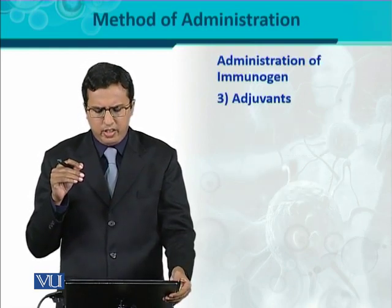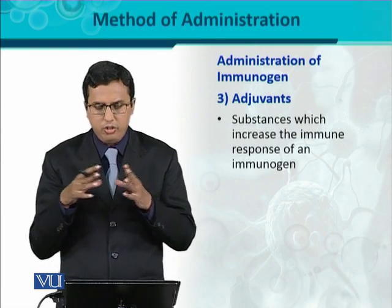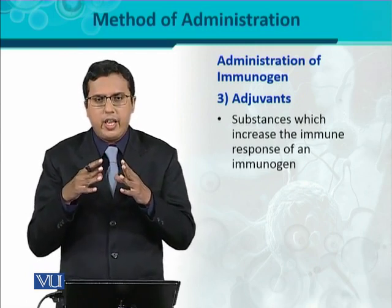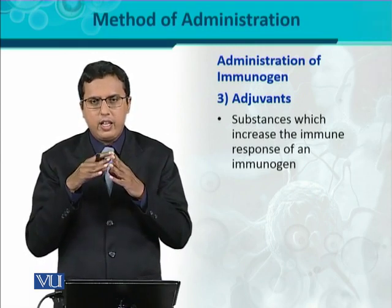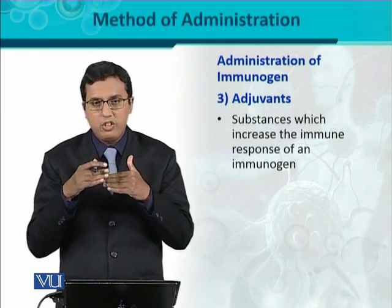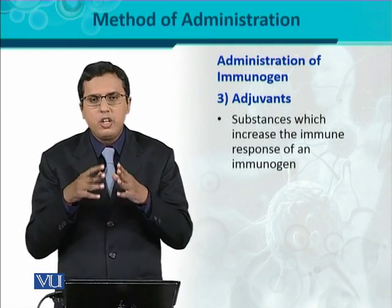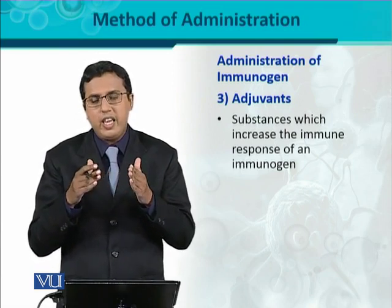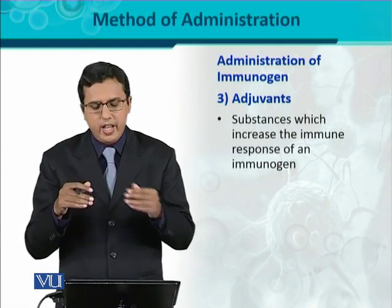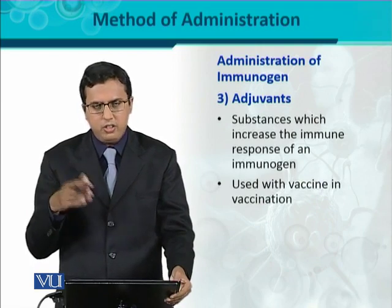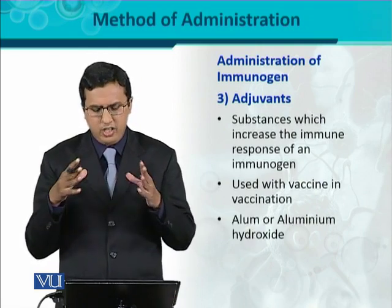The third important factor is the adjuvant. Adjuvants are basically substances or molecules which increase the immune response. If a substance is added along with an immunogen to increase the immune response and boost its immunogenicity, those substances are called adjuvants — meaning they work adjunct to the immunogen. That is why they are called adjuvants.